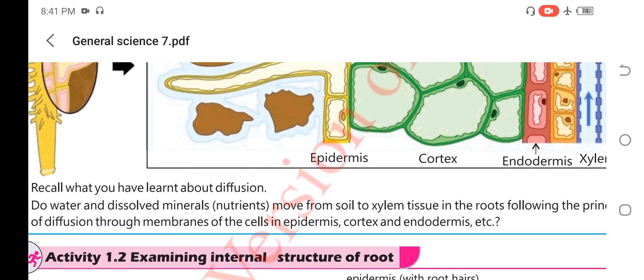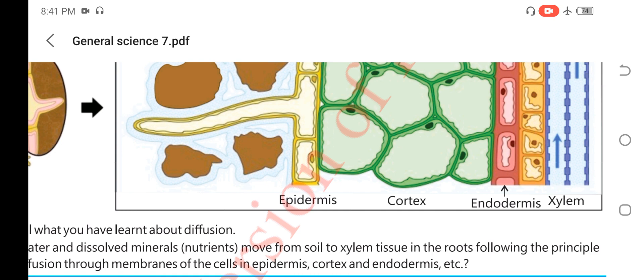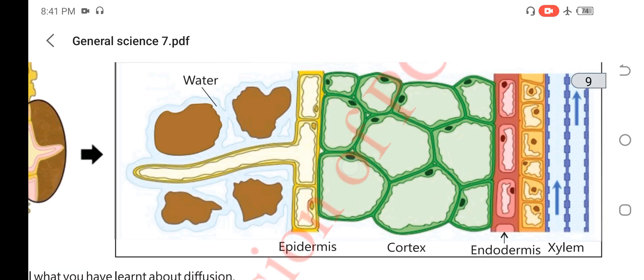Recall what you have learned about diffusion. We need to know which process is occurring here. Water moves in plants through the process of diffusion. Diffusion is the process that moves material from the area of high concentration to the area of low concentration. Diffusion is the process that moves water from soil to the plants.